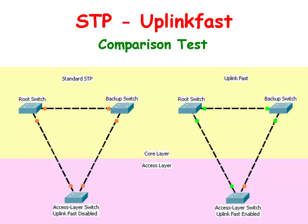The Uplink Fast feature bypasses the listening and learning state for alternate ports in case the root port goes down, for faster convergence. Usually the spanning tree protocol takes about 30 seconds to converge. Keep in mind that the port does not have to go into blocking state since it keeps receiving superior BPDUs with the root bridge.